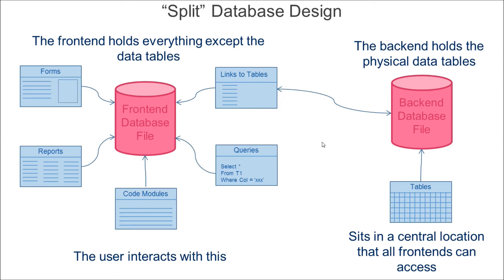In a split database design we have at least two databases involved. We have a front-end database that holds our forms, reports, code modules and macros, and our queries. And we have what we call a back-end database that holds just our data tables — not necessarily all the data tables, but any of the data tables where you'd expect your data to change often. Then what we do is link the front-end database to the back-end database by creating linked tables. In the front-end you have table entries that look like tables, but they actually point to the tables in the back-end database.